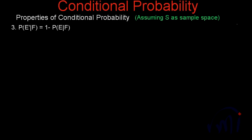Hi, and now we are going to learn the third and the final property of conditional probability. This is the probability of event E not happening when F has already happened is equal to 1 minus the probability of event E happening where F has already happened.